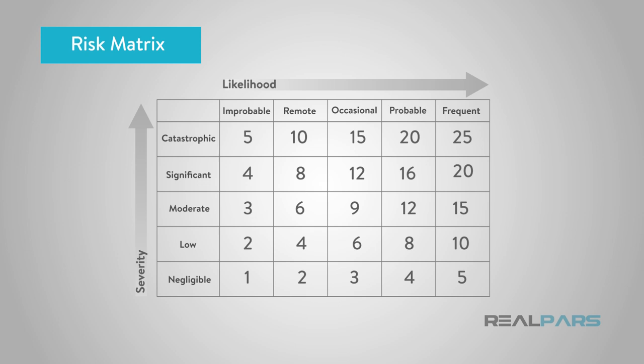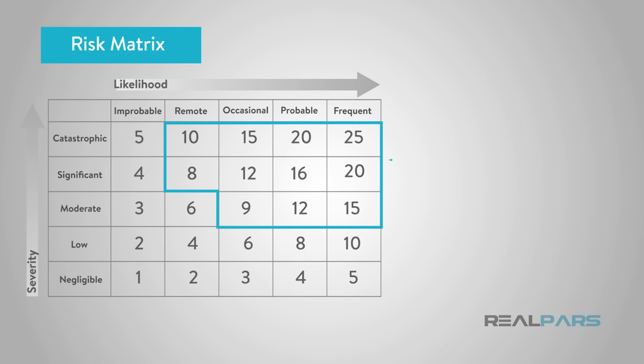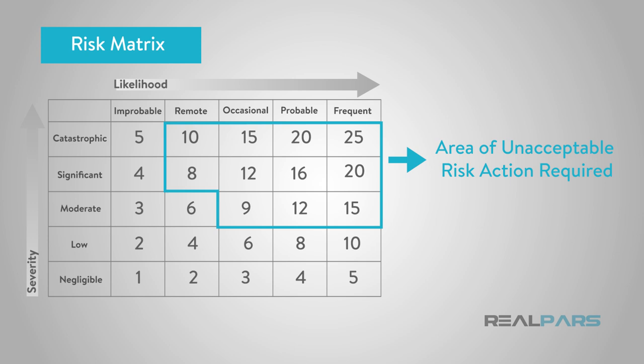In designing a safety instrumented system, the design team must do a detailed risk analysis, identifying all of the potential risks and deciding which require a Safety Instrumented Function to be defined. A detailed risk matrix can be used to identify the level of risk that is tolerable and at what point a function requires an SIF to be defined. This can be done qualitatively or quantitatively by assigning numerical values to the expected frequency and severity of the risk.